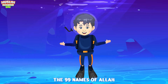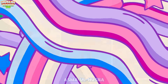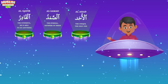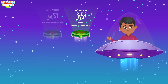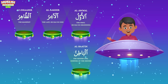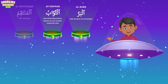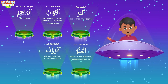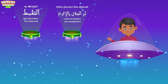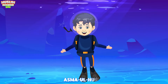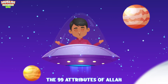Asma'ul Husna — the 99 names of Allah, the 99 attributes of Allah. Al-Wahid, Al-Ahad, Al-Samad, Al-Qadir, Al-Muqtadir, Al-Muqaddim, Al-Mu'akhkhir, Al-Awwal, Al-Akhir, Al-Zahir, Al-Batin, Al-Wali, Al-Muta'ali, Al-Barr, Al-Tawwab, Al-Muntaqim, Al-Afuw, Al-Ra'uf, Malik-ul-Mulk, Dhul-Jalali-wal-Ikram, Al-Muqsit, Al-Jami', Al-Ghani. Asma'ul Husna — the 99 names of Allah, the 99 attributes of Allah.